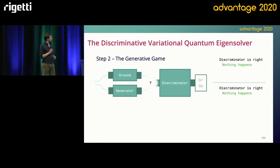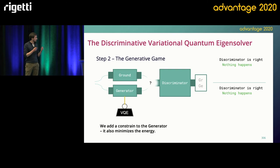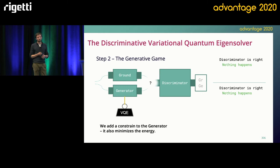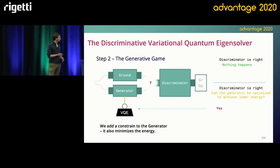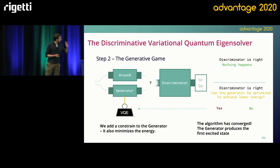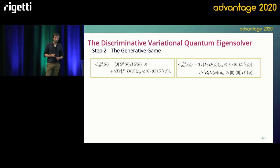To go further, we add a constraint on the generator. We ask the generator, at the same time as it helps the discriminator distinguish between the two states, to compute the energy of the Hamiltonian that we're looking at — so the same thing as a VQE. If we do this, we also need to change the rules of the game. If the discriminator is right in identifying a generated state, we need to check if the generator is doing its job properly — namely, can it be optimized to achieve a lower energy? If yes, we update the generator and continue the loop iteratively until convergence. If no, we've converged, and what we've found is a state which is both orthogonal to the ground state and minimizes the energy, which means we've found the first excited state. This is just an analogy — we cannot implement this directly on the quantum computer, but we can define it in mathematical terms which can then be implemented. We define two cost functions, one for the generator and one for the discriminator, which we update iteratively until convergence.